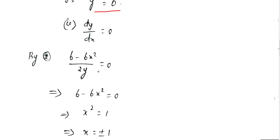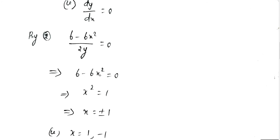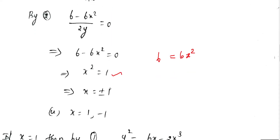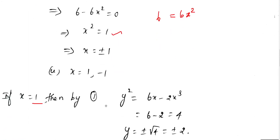Cross-multiplying, the left side is 6 - 6x² and the right side is 0. Moving terms, 6 = 6x², so x² = 1, and x = ±1. When x = 1, substituting into the curve equation gives y = 2, so y is approximately 2.